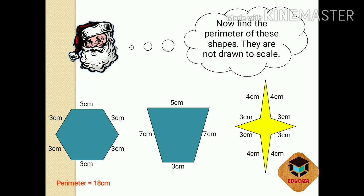Next shape: 5 plus 7 equals 12, plus 3 equals 15, plus 7 equals 22 centimeter. The perimeter of this shape is 22 centimeter.